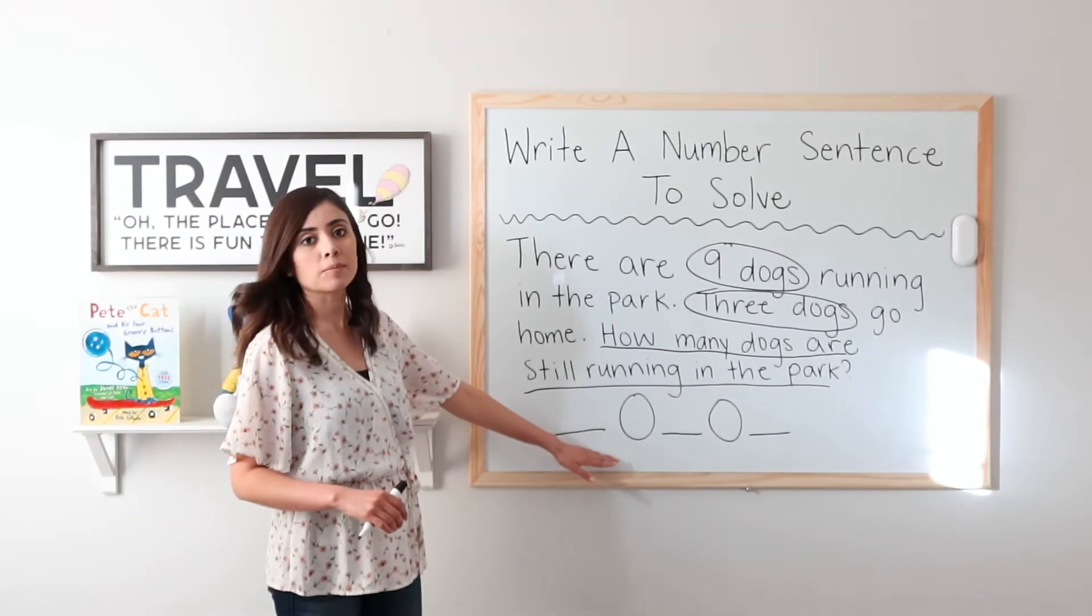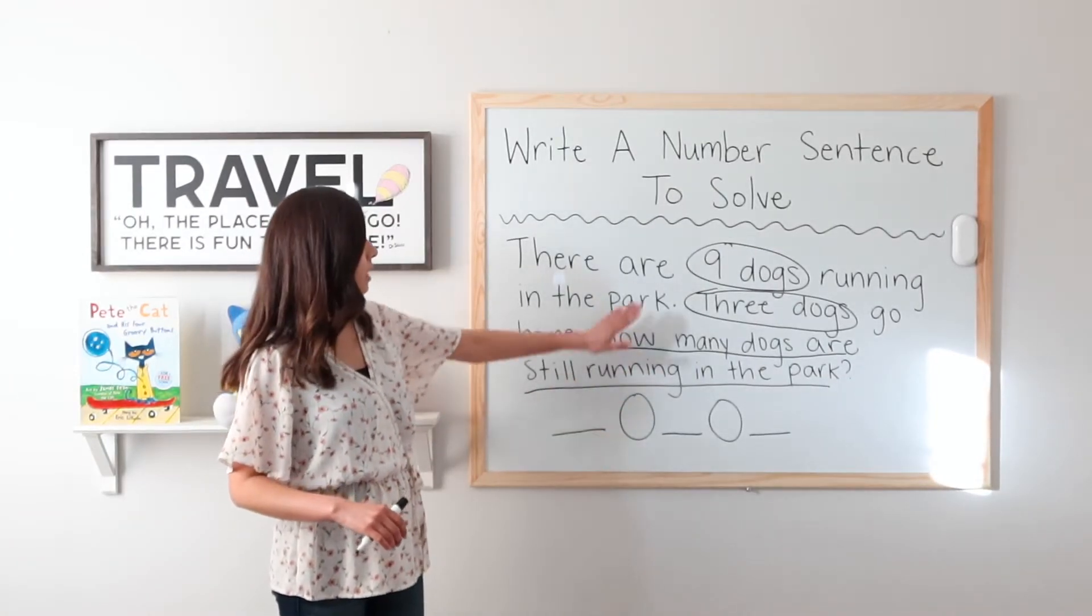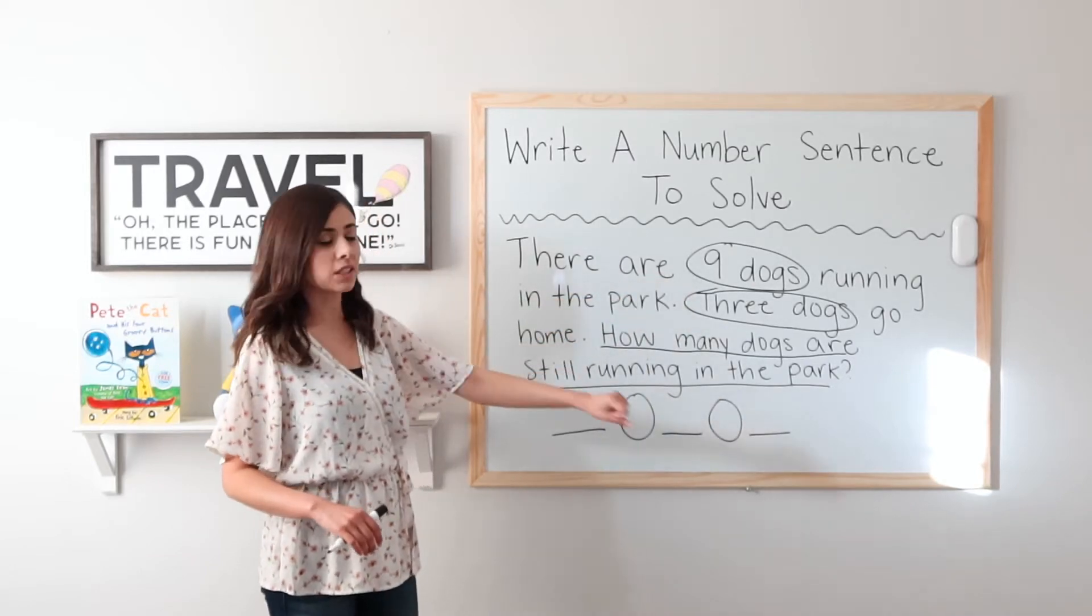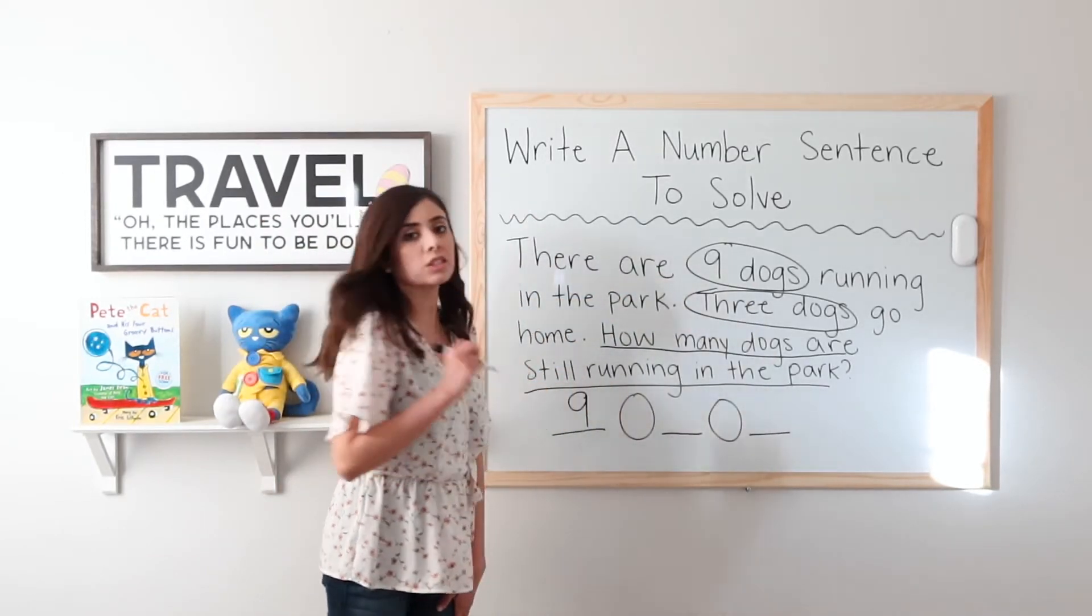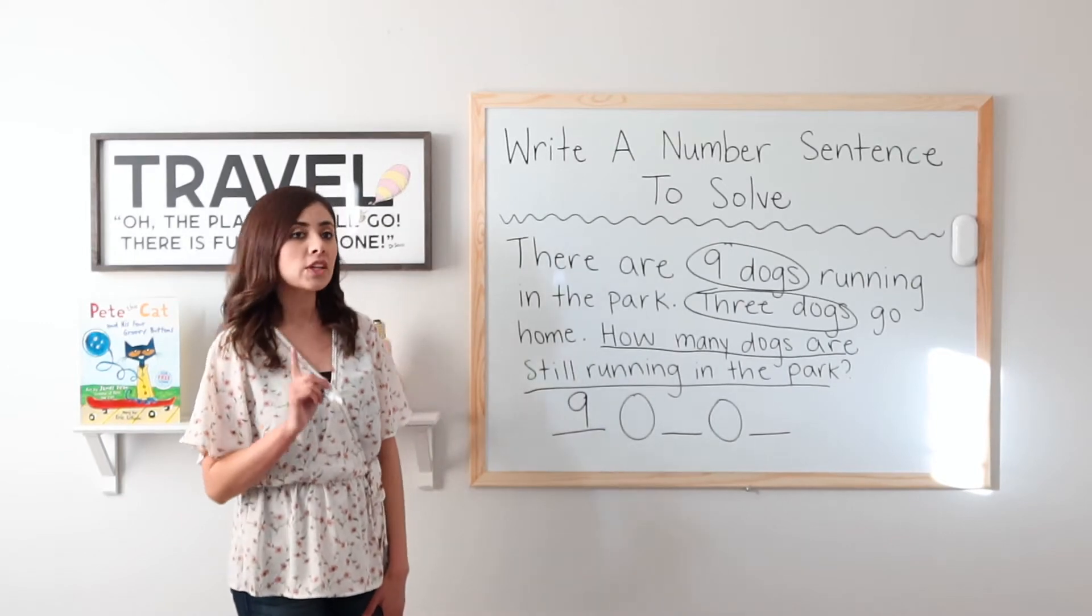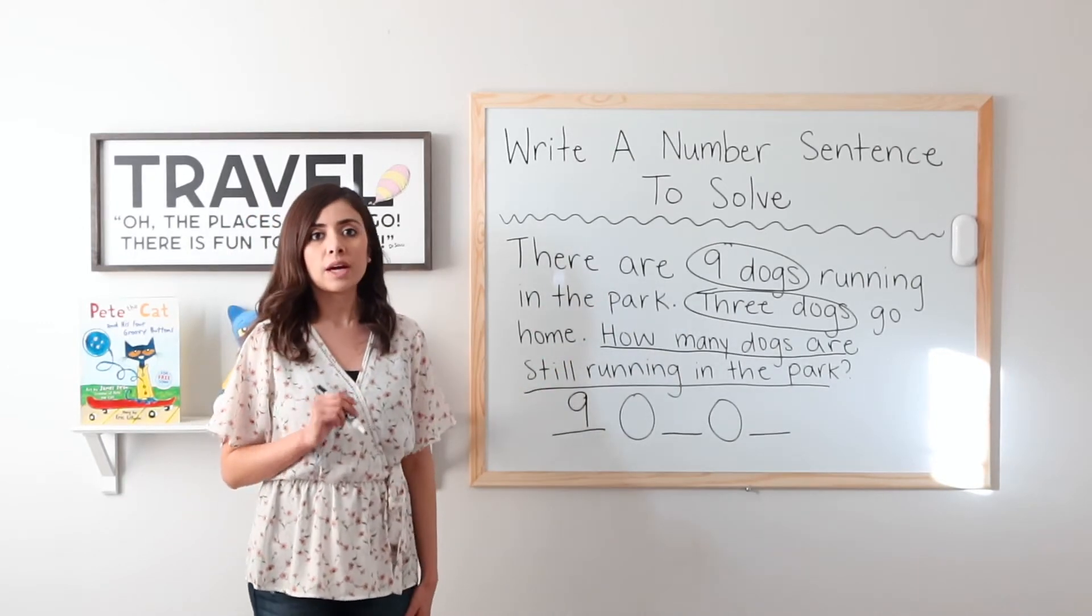Okay, the fourth step is to fill in our number sentence. I have nine dogs running, so let's start with nine. That is what we started off with.